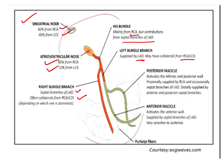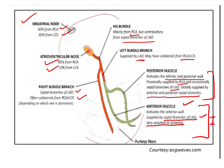The left bundle branch divides into anterior and posterior fascicles. The anterior fascicle activates the anterior wall and is supplied by the septal branch of the LAD — so whenever we get a left anterior fascicle block, think of LAD. The anterior fascicle is very sensitive to ischemia because it has a single blood supply. The posterior fascicle activates the inferior and posterior wall and has a dual supply from the right coronary artery and occasionally the septal branch of the LAD — that is why it is less sensitive to ischemia.